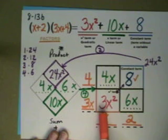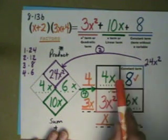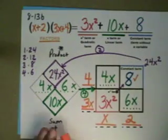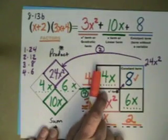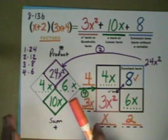Notice again, 3x² times 8 is 24x². 4x times 6x will also be 24x².